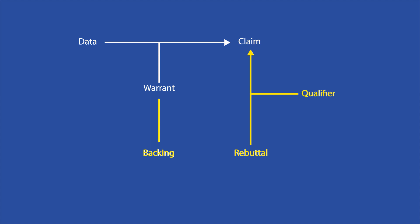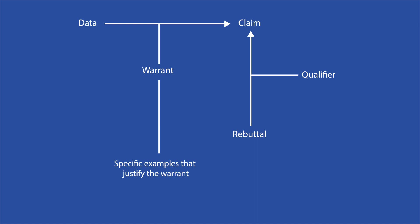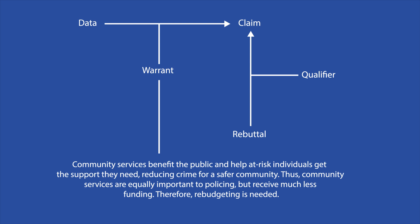The other three components — backing, rebuttals, and qualifiers — are supplementary, but add value to an argument when included. Because warrants are often only implied, and not everyone shares the same assumptions, a warrant may need further explanation to really cement your point. Thus, it is often accompanied by a backing, or specific examples that justify the warrant, demonstrating how it is a rational assumption. For our example, the backing could be: "Community services benefit the public and help at-risk individuals get the support they need, reducing crime for a safer community. Thus, community services are equally important to policing, but receive much less funding. Therefore, rebudgeting is needed."